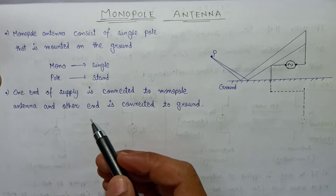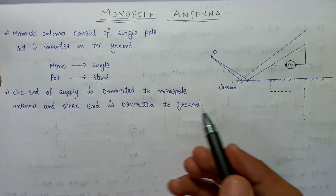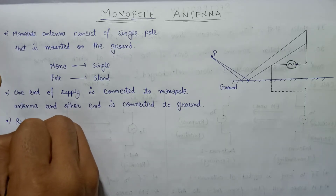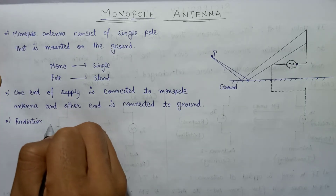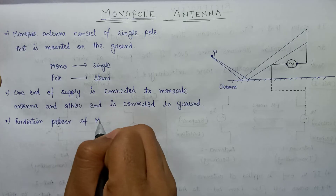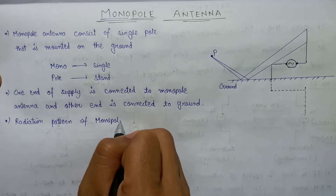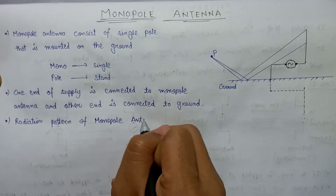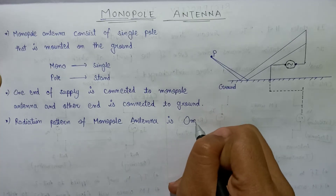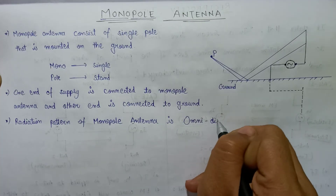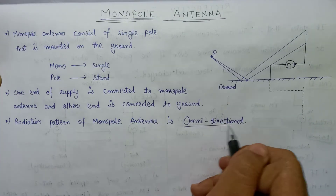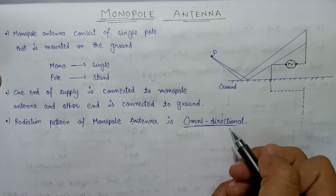The radiation pattern of the monopole antenna is omnidirectional in each and every case — the radiation pattern of the monopole antenna is always omnidirectional. This is how the radiation pattern of the monopole antenna looks like.